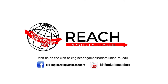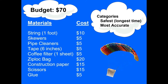Real engineers have to learn how to design and manufacture a device while under cost, time, and other restrictions. For this project, you will have 10 minutes to build a parachute using the list of supplies listed on the slide. Each material has a cost attached to it, and altogether you cannot spend more than $70 on your parachute. Your chute must be able to hold a ping pong ball, since that will be the object we drop from a height. The goal is to design a parachute that takes the longest time to land, but does it accurately — your ping pong ball should reach the target marked on the ground.